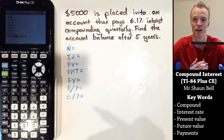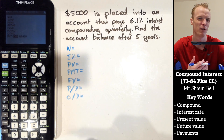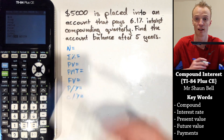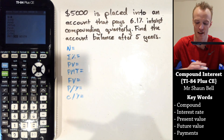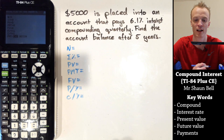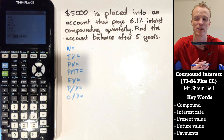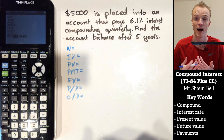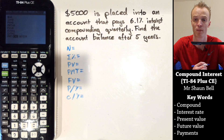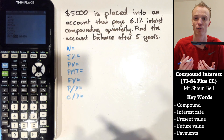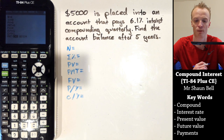It's really important here: if you're used to using the formula where you convert to a decimal, when you input this value into the calculator you input it as the actual percentage, not the decimal. PV stands for present value — how much you're putting into your account in a savings situation, or how much you're borrowing in a loan situation.